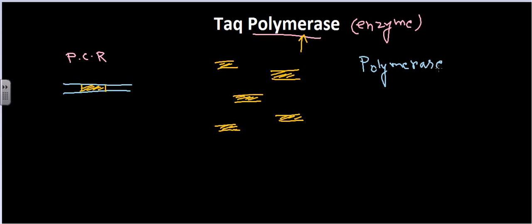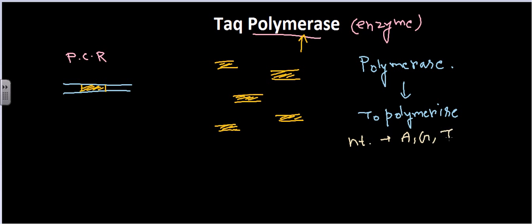The effect of a polymerase enzyme is simply to polymerize. When talking about DNA or RNA, what the polymerase is doing is joining nucleotide sequences — like adenine, guanine, thymine, cytosine — one after another: A, then G, then G, then C, then T, and so on.